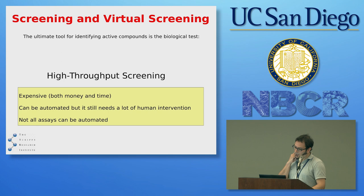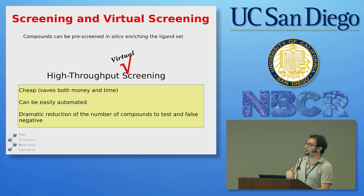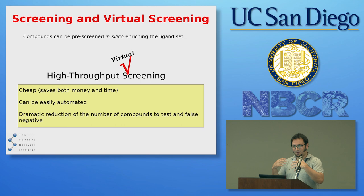The problem is that if you have no inhibitors and you're starting from scratch, the only way to find compounds is to do a high-throughput screening — the actual experiment, trying to do a binding assay for example — with hundreds of thousands of compounds. The problem with that is it's very expensive, both in terms of money and time. It can be automated, but it still takes a lot of human intervention to prepare the samples, and not necessarily all assays can be automated. This is where the virtual part comes in.